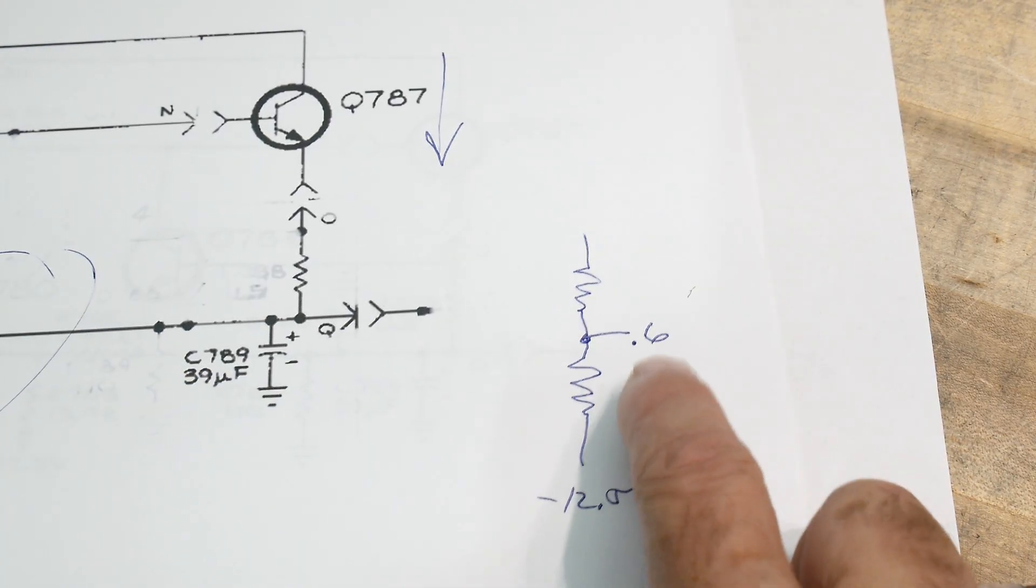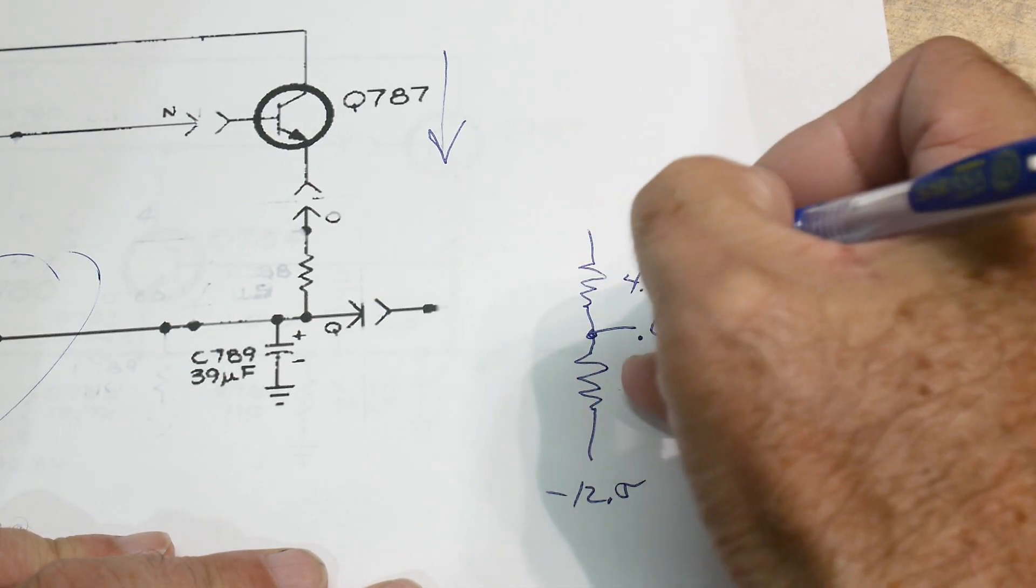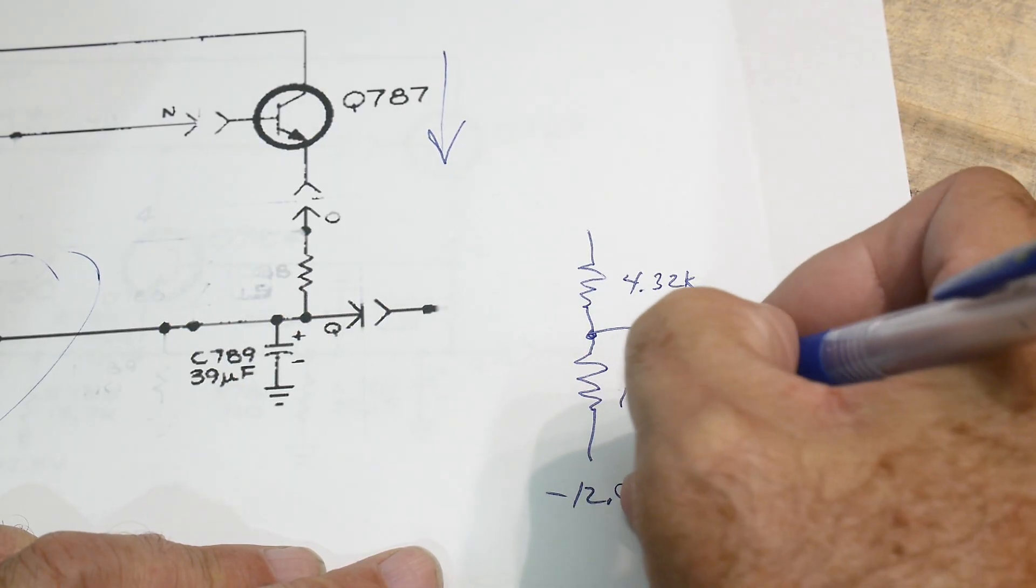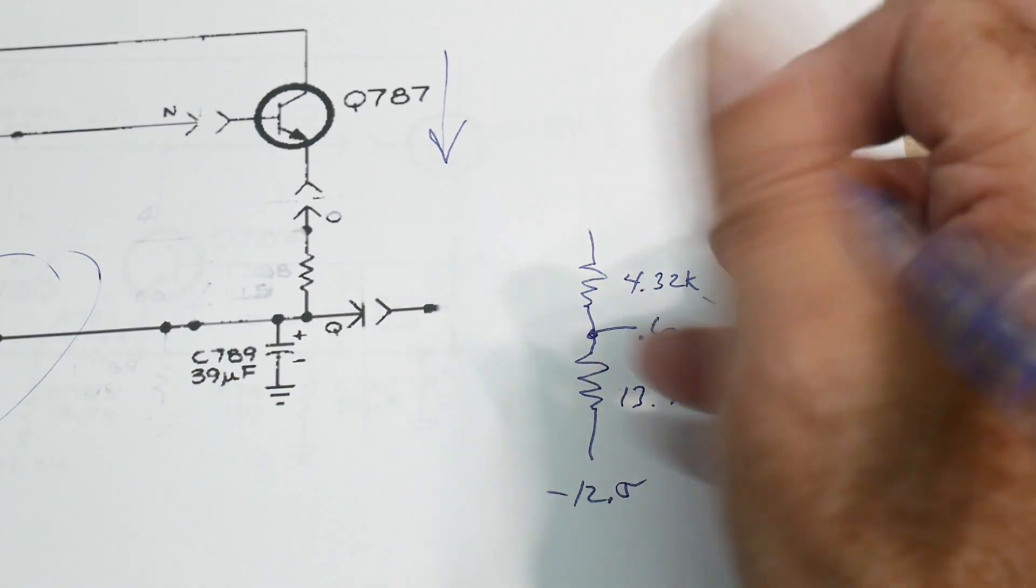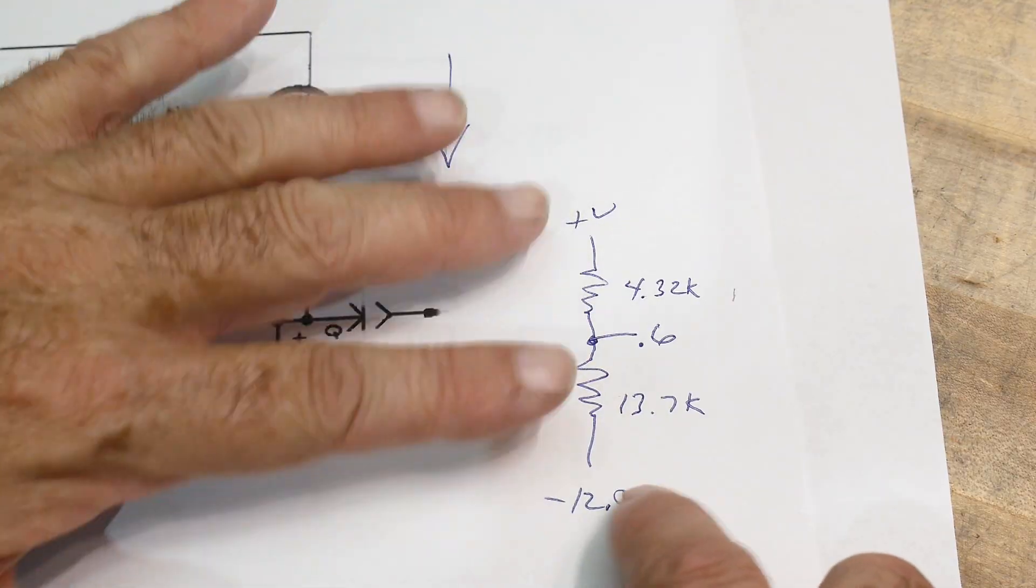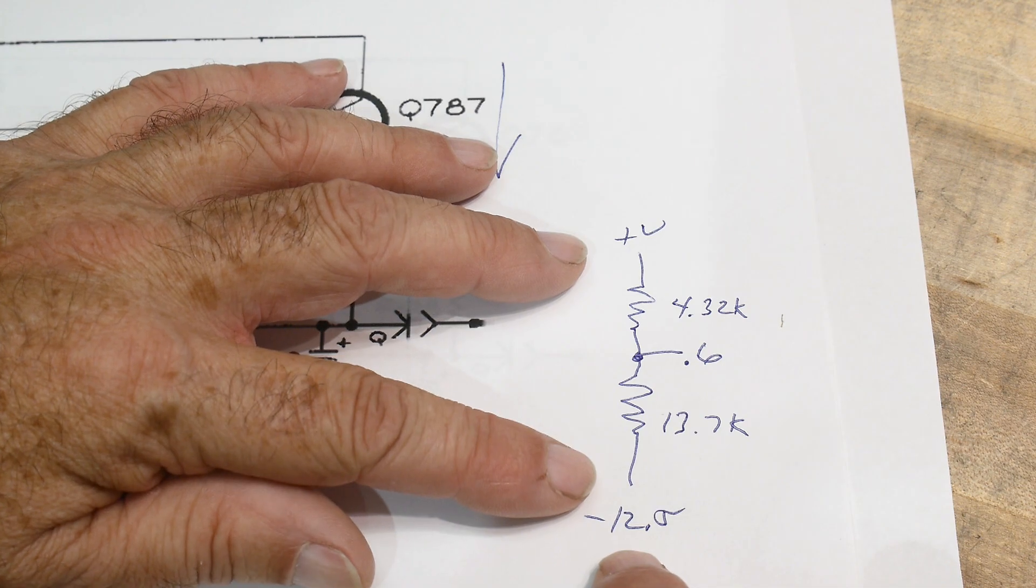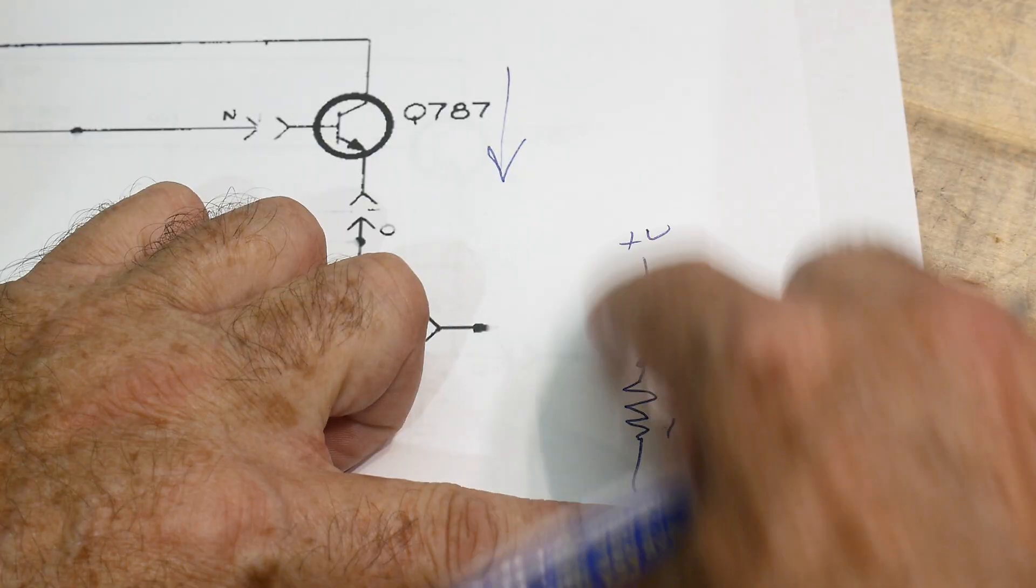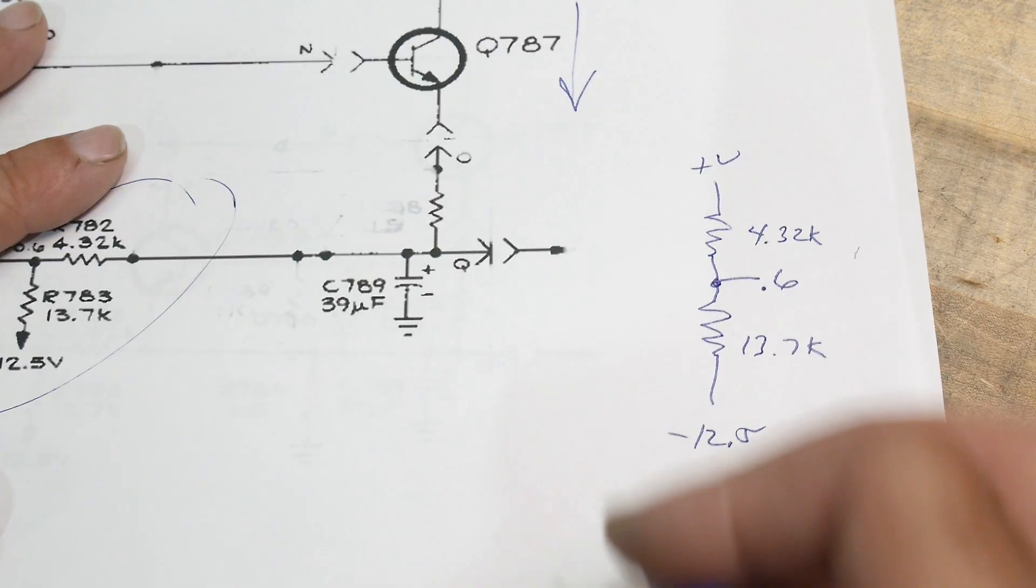This is minus 12 and a half, and this is going to be right in the middle, 0.6 volts. We want to know when does 0.6 volts happen. We have 4.32K and 13.7K. I'm not used to thinking of this as our variable. We want to know what plus V is - this is our variable. I'm not really used to doing it that way. If it were ground here, then I know I can just do this and that will give me a ratio. Let me redraw it.